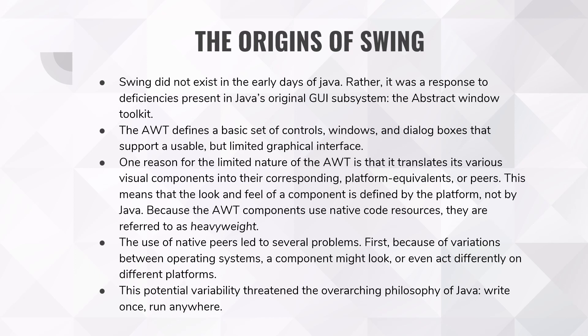What this exactly means is AWT had a lot of limitations and restrictions. The look and feel would vary from one platform to another, and we could not use some integrated graphical features. So when we wanted to use all these features, we needed some other toolkit, and hence Swing was developed. The use of native peers led to several problems. First, because of variations between operating systems, a component might look or even act differently on different platforms. This potential variability threatened the overarching philosophy of Java — write once, run anywhere. Hence, this AWT feature was also against the philosophy of Java: write once, run anywhere.